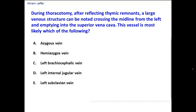During thoracotomy, after reflecting thymic remnants, a large venous structure can be noted crossing the midline from the left and emptying into the superior vena cava. This vessel is most likely which of the following? It is clear from the description that this structure is located in the superior mediastinum just behind the thymus — it's a vein draining into the superior vena cava, crossing from left to right.